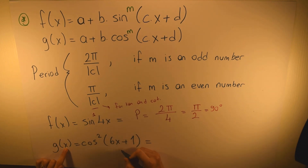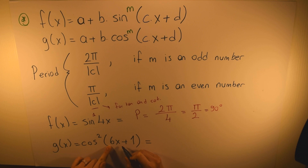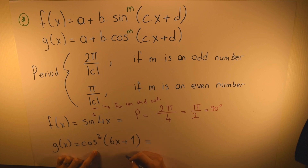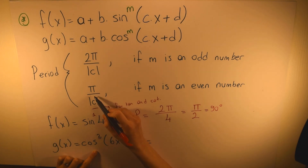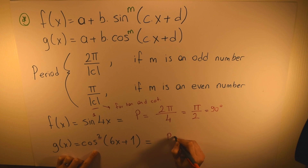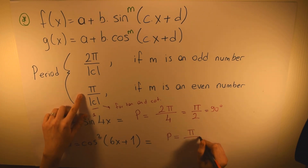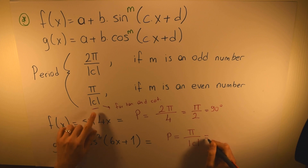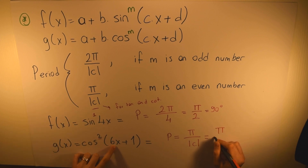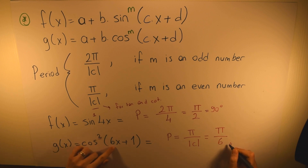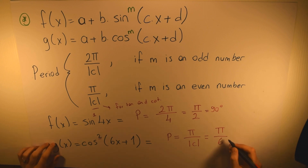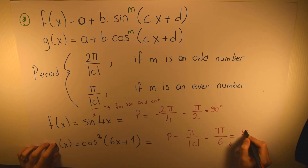For g(x) = cos²(6x + 1), the exponent is 2, which is an even number. So we use the formula: period = π over |c| = π/6. The period of this function is π/6, which is also equal to 30 degrees.